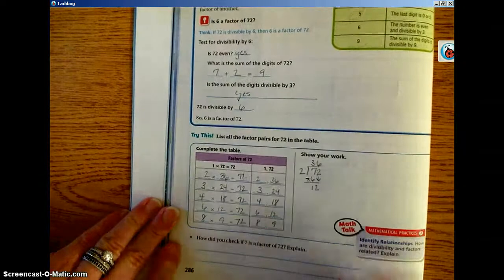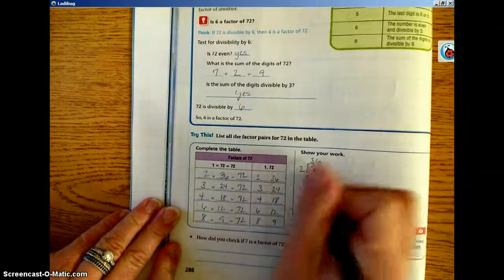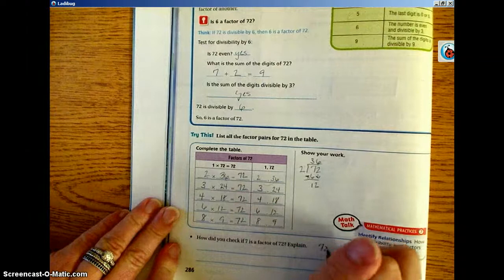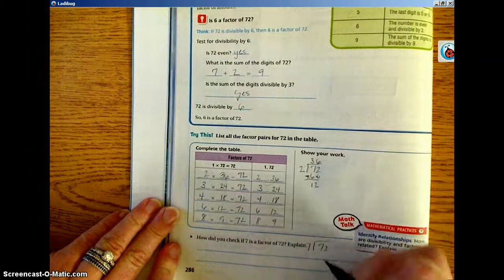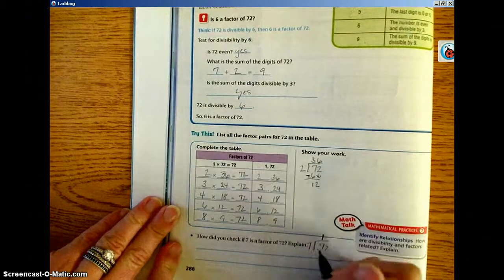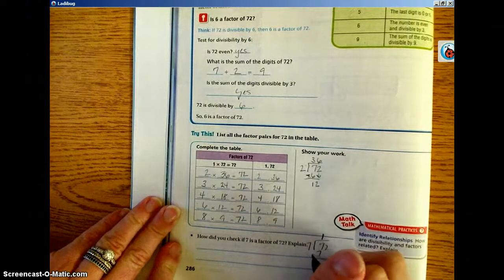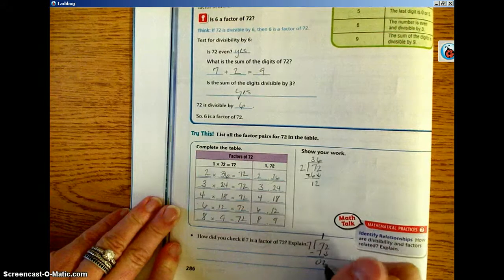You can do division, just like I did here. 72 divided by 7. 7 goes into 7 one time. 7 times 1 is 7. Subtract, we get 0. Bring down our 2.